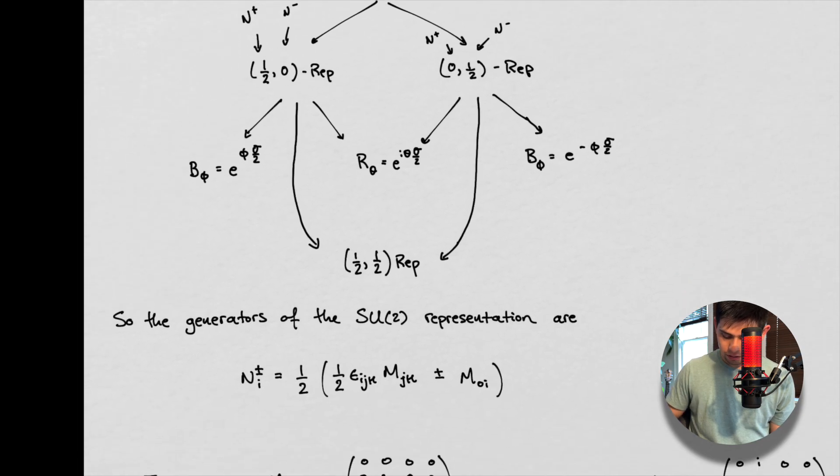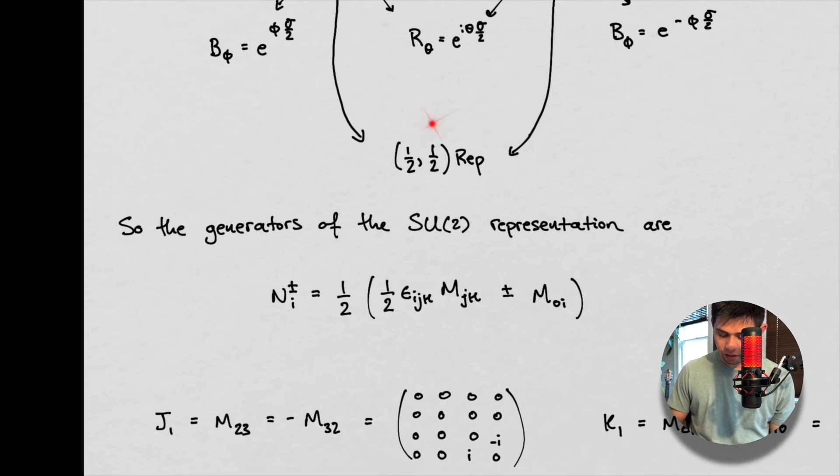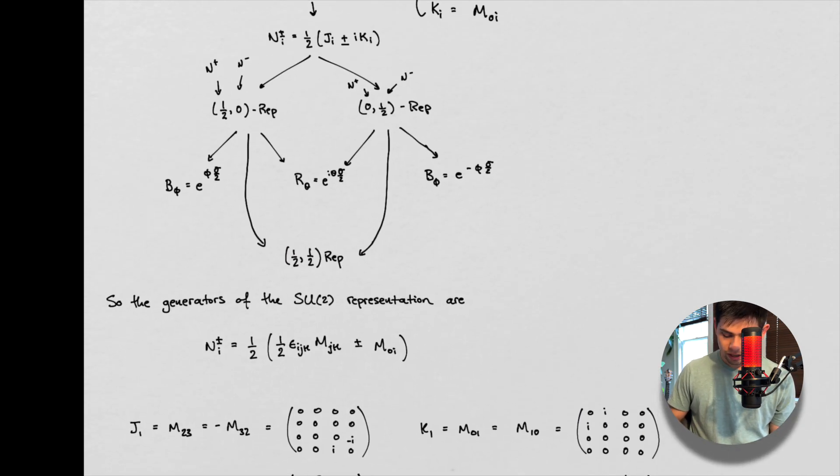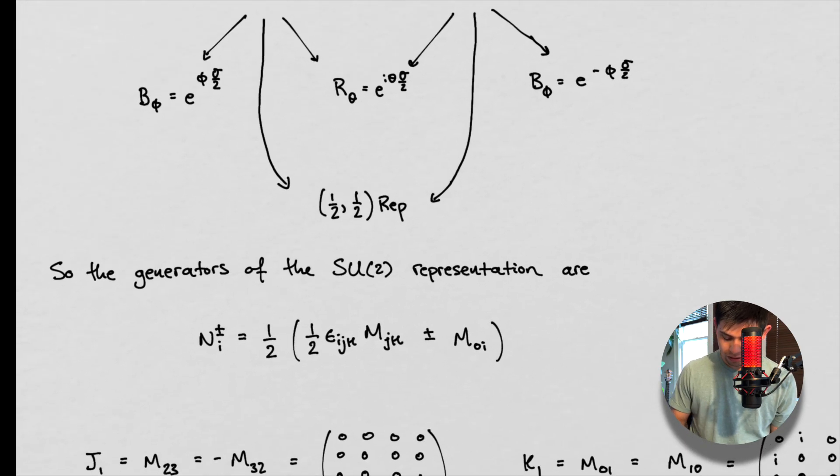And then what we said was, we can also construct a one half, one half representation. And this one half, one half representation can be thought of as bringing these two guys together. So we have the one half coming from over here and the one half coming from over here. And we can think of this as one half, zero, zero, one half representation.